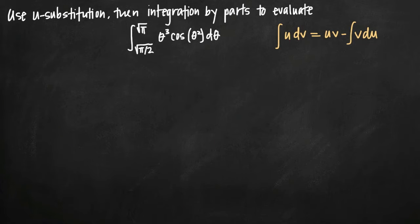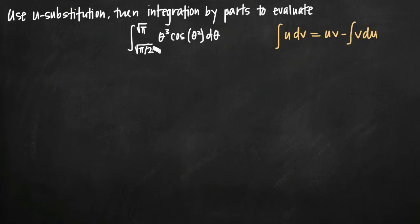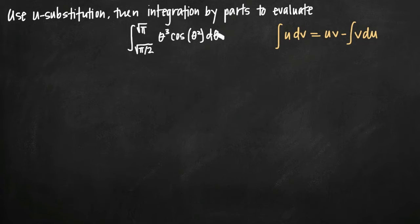Today we're going to be talking about how to use u-substitution and then integration by parts to evaluate an integral. In this particular case, we've been given the definite integral of theta cubed times cosine of theta squared d-theta, evaluated on the limits of integration from square root of pi over two to square root of pi. I've gone ahead and written the integration by parts formula over here on the right. This problem asks us to make a substitution first and then use integration by parts once we've simplified the function inside our integral.